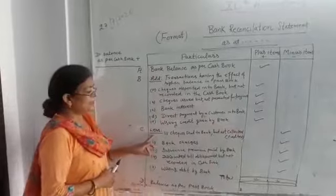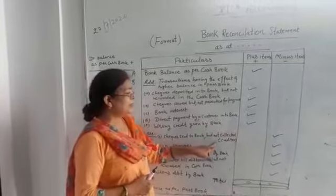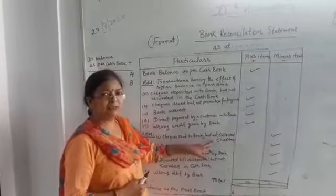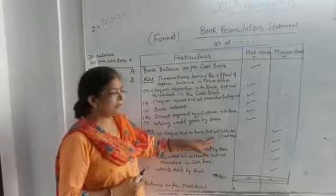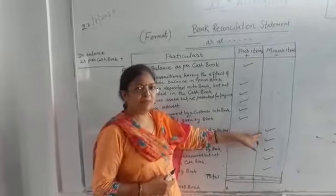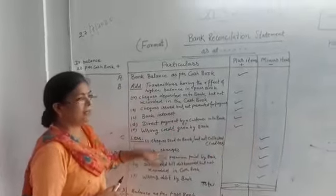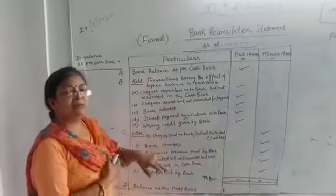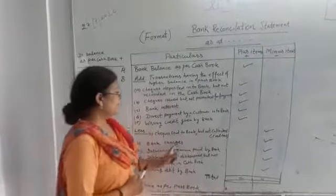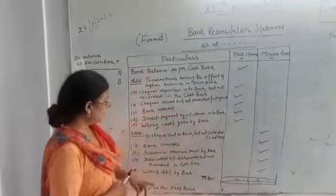Now these are the minus items. Cheque sent to the bank but not collected — we sent the cheque to the bank but it was not credited, so this must be minus from the cash book because it was not deposited in the bank. After that, bank charges — bank charges means the bank has deducted charges from our account.